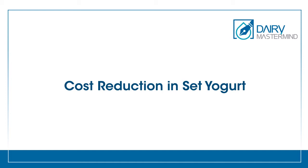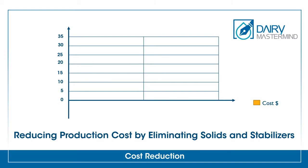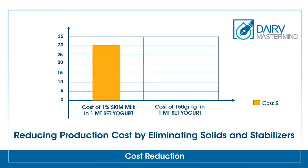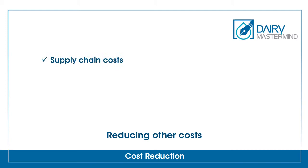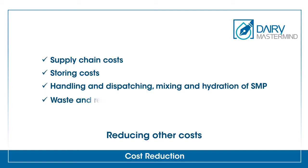TG keeps the natural taste of the product in comparison with the use of stabilizers. Regarding cost reduction in set yogurt, the cost of 1% of SMP in set yogurt formulation is much higher than 150 ppm of TG enzyme. This change not only improves quality but also reduces cost. With the use of 150 ppm of TG enzyme with activity of 100 units per gram instead of 1% SMP, we can reduce supply chain costs, storing costs, time-consuming and high-risk processes like handling, dispatching, mixing and hydration of SMP, as well as costs due to waste, rework and health problems.